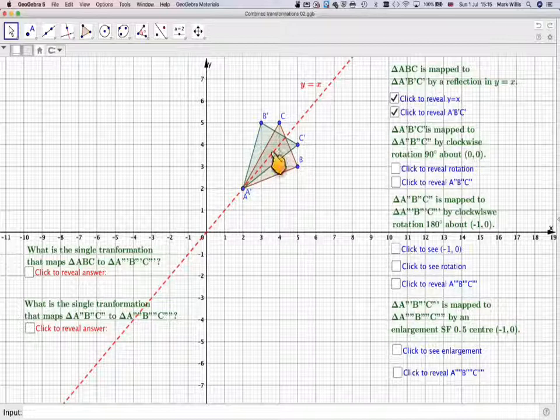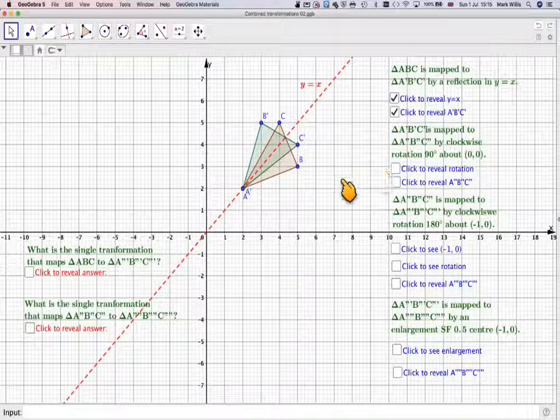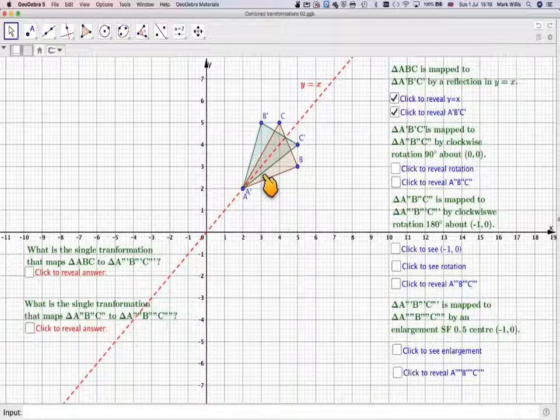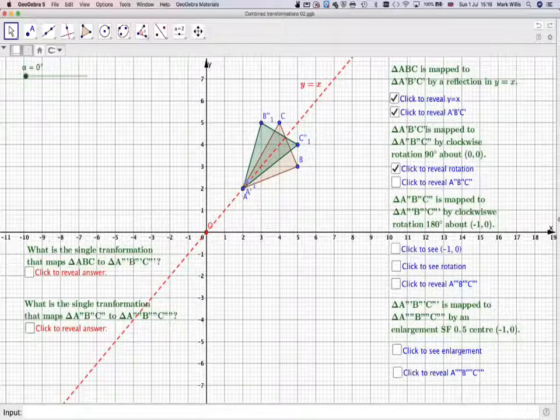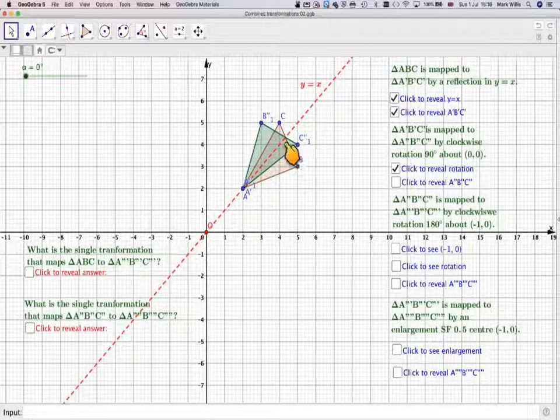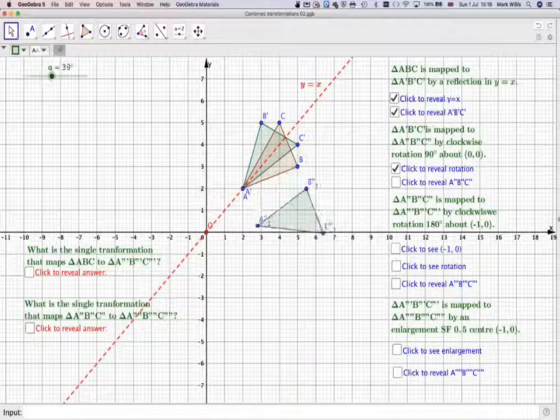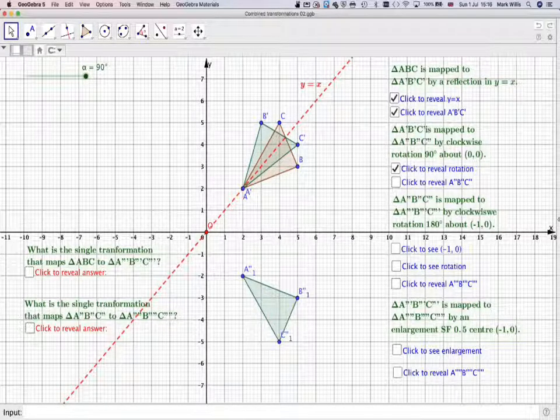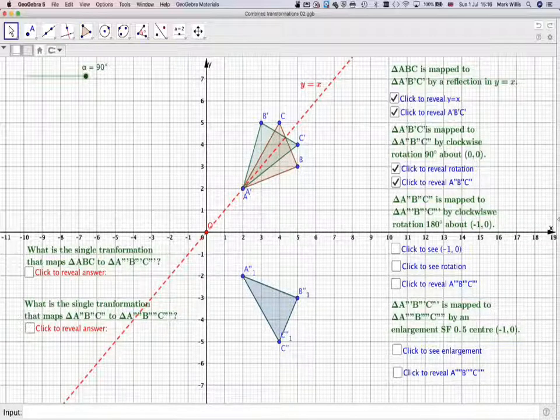Then it says that A', B', C' is mapped onto the next one by a clockwise rotation about (0, 0). If you mark on the point (0, 0), which is there, take a piece of tracing paper, trace it out. So there is the centre. You trace round that one there, and then clockwise is that way. So it will rotate clockwise with your tracing paper like that. When you get to 90 degrees, you will need to put a point on each of the vertices, and that will give me the image A'', B'', C''.